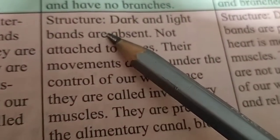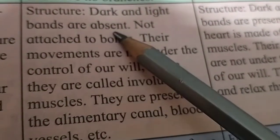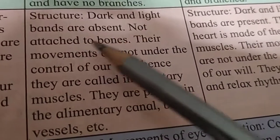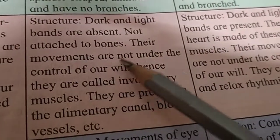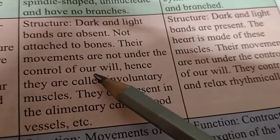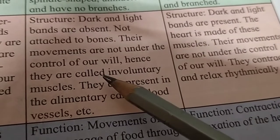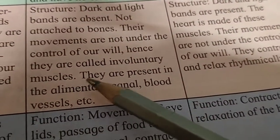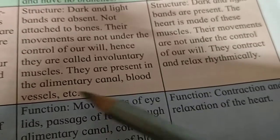In non-striated muscles, dark and light bands are absent, and they are not attached to the bones. Their movements are not under the control of our will, hence they are called involuntary muscles. They are present in the alimentary canal, blood vessels, etc.